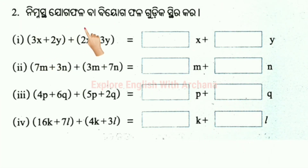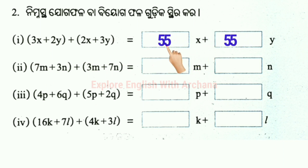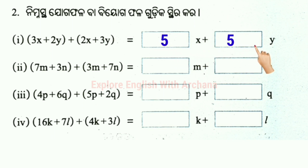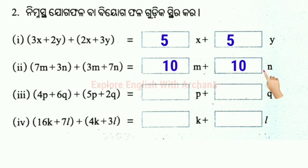Number 2: x, x, y, y. Then the number 3: x plus y plus 2x plus 3y is equal to 5x plus 5y. Number 2: 7m plus 3n plus 3m plus 7n. 7m plus 3m equals 10m. 3n plus 7n equals 10n.